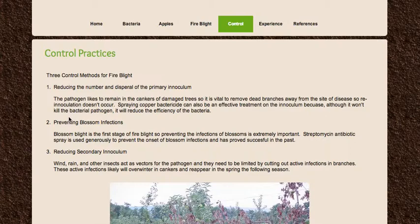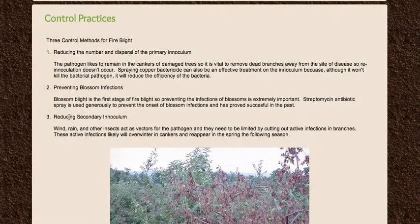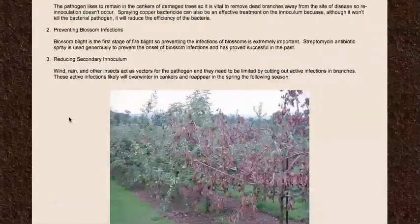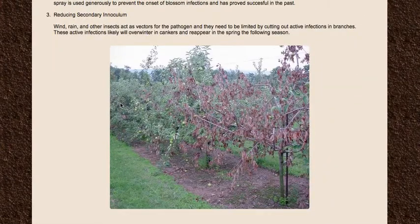The third and final method is reducing the secondary inoculum. When you know your farm has been hit by this disease, you'll see branches breaking down on the ground. You might think that since they're dead, they're no longer harmful — but that's totally not true. As I said, the cankers develop on the branches, and inside the cankers the pathogen is resting and waiting to come out. You want to dispose of all these broken-down branches to reduce any chance of a secondary infection.